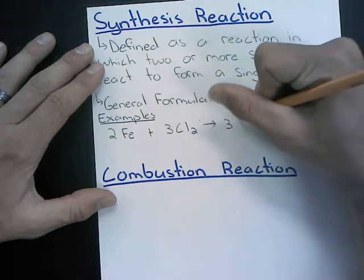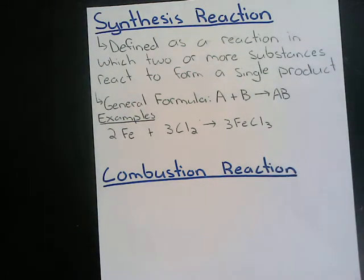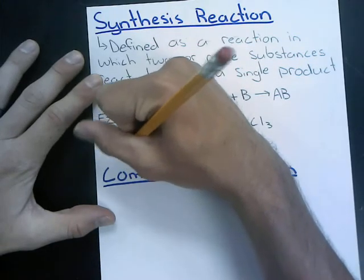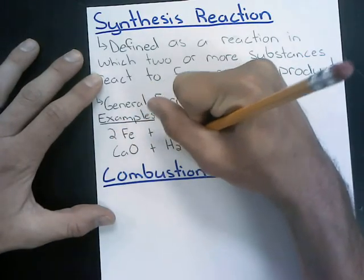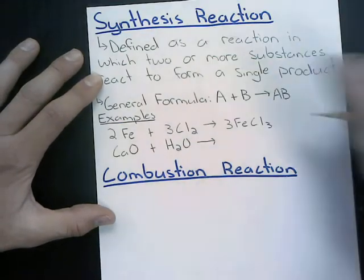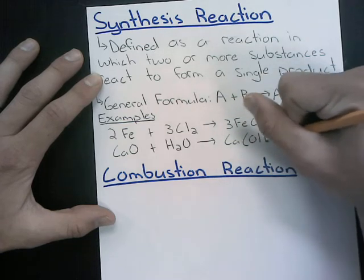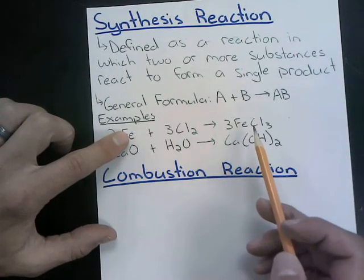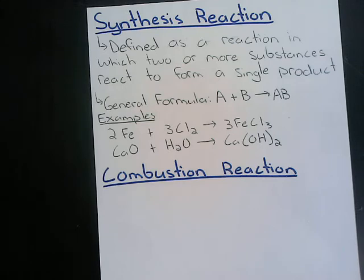One example is where two elements form one compound — solid iron reacting with chlorine gas to form iron(III) chloride. We also have instances where two compounds form one compound: calcium oxide (CaO) plus water (H2O) react together to form calcium hydroxide. The key pattern is two or more substances condense down to one particular product.